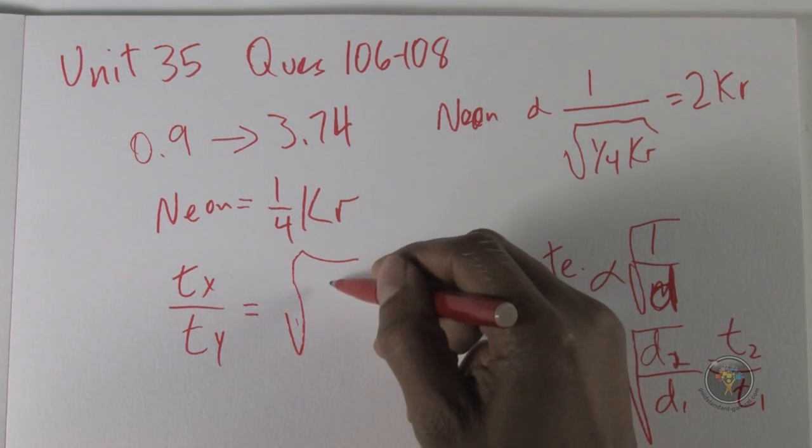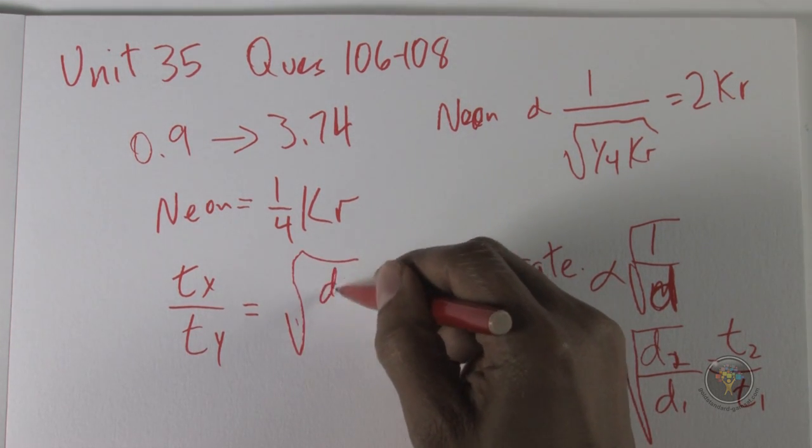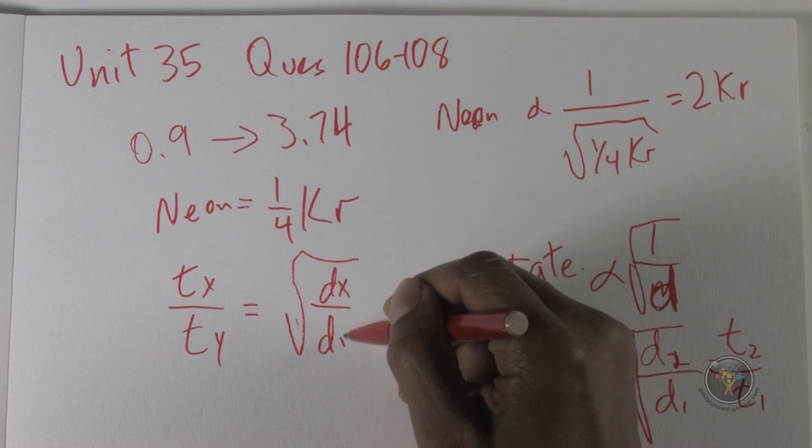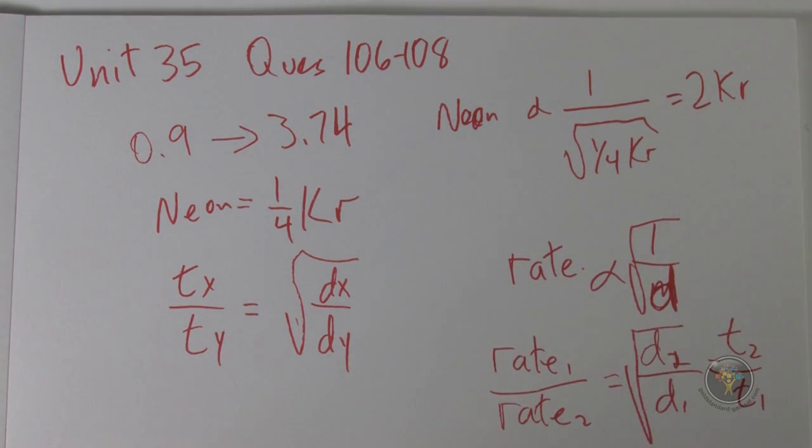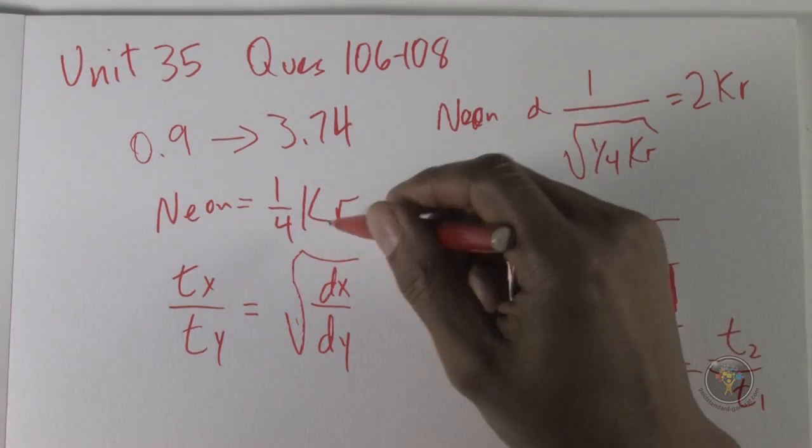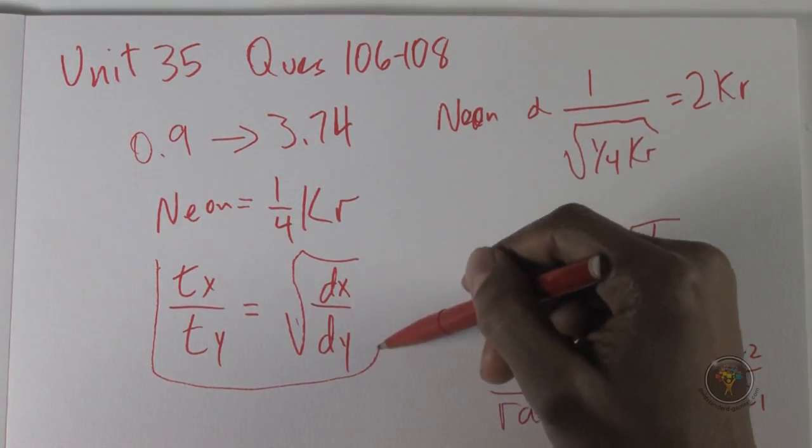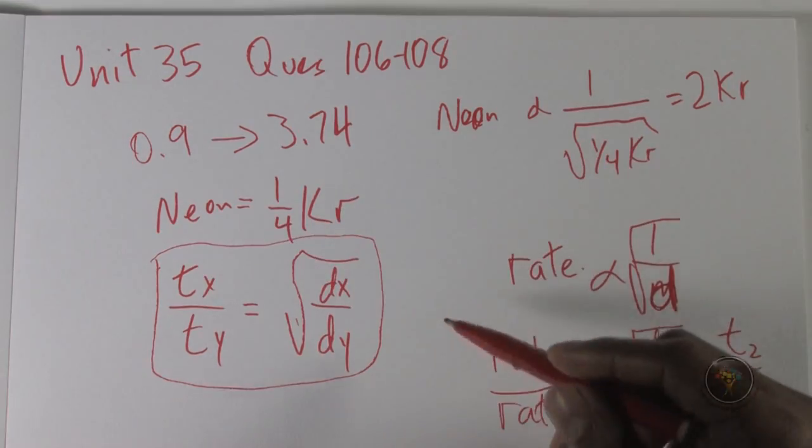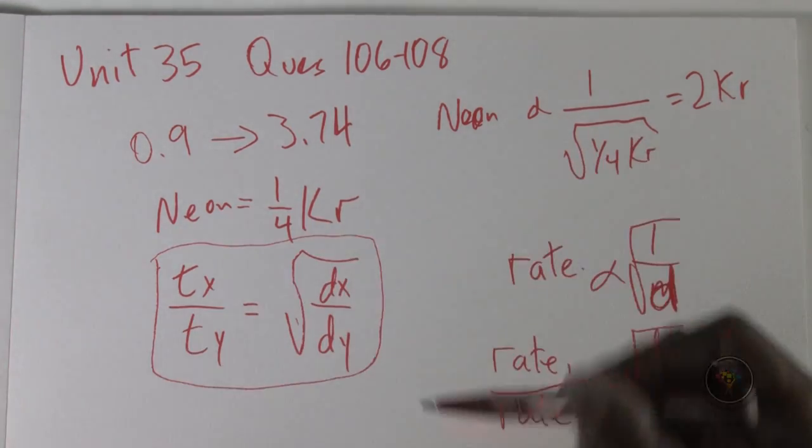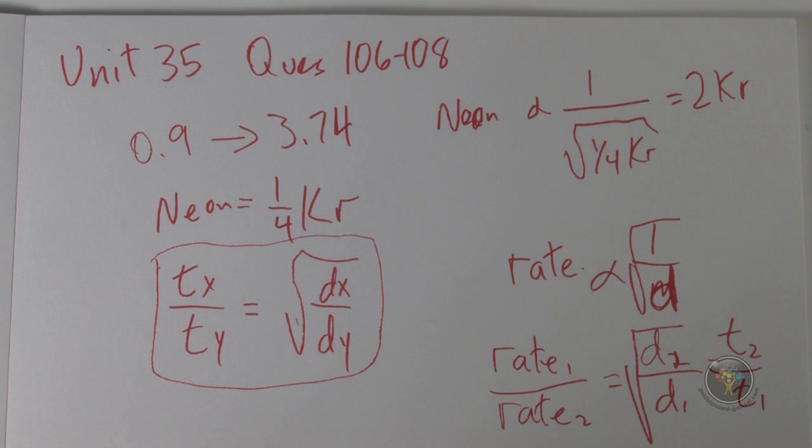Where this is the density of compound X, the density of compound Y. And of course, often when there are multiple questions in a passage, if ACER gets you to derive a particular type of equation, then the next question they're asking you to use that equation that you just came up with.